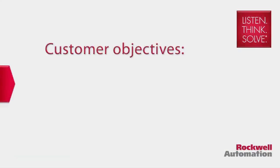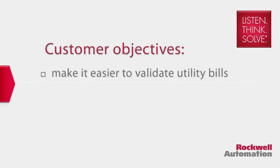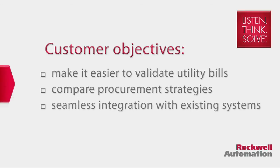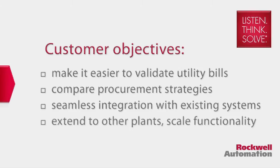Let's look at a food and beverage customer in New England. Their objectives were to make it easier to validate their utility bills, to speed up the process of paying their utility provider, provide a comparison of their procurement strategy with other scenarios, and to allow for seamless integration with their existing systems while considering how it can be extended to other plants and scaled to incorporate additional manufacturing data to future-proof their investment.